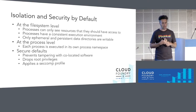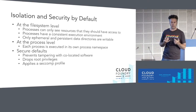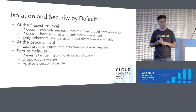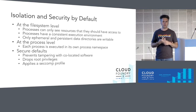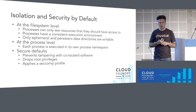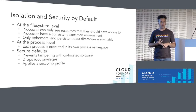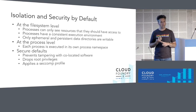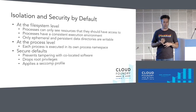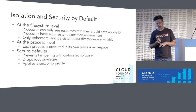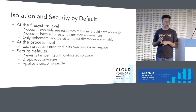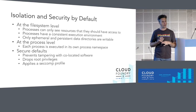At the process level, each process starts its execution in its own process namespace. If you're inside that process namespace, you only see yourself running. Secure by default — it prevents tampering with co-located software, either reading another job's config or writing to the stemcell. It automatically drops root privileges and we apply a conservative but common seccomp profile to all the jobs running.